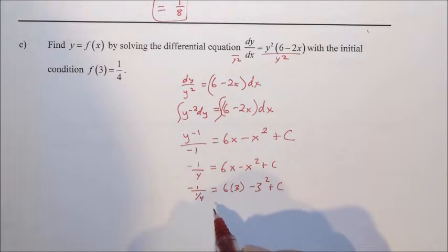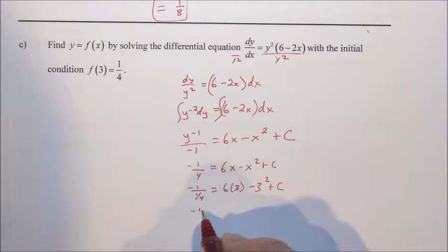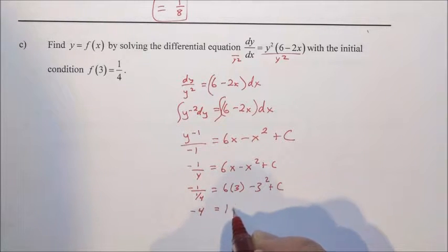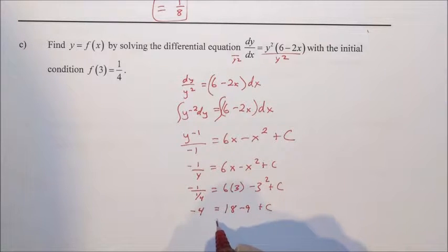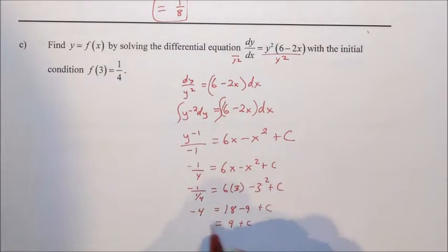How many times does a quarter go into a dollar? 1 divided by 1/4 is 4. In essence, we're multiplying by the reciprocal. Of course, we have our negative sign, so negative 4 is equal to 18 minus 9 plus c. 18 minus 9 is 9, so 9 plus c is equal to negative 4, and c is equal to negative 13.